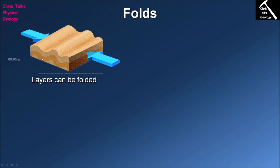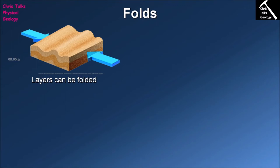Down in the ductile zone, this same sequence of rocks, because it is more plastic and able to flow, will not fail in a brittle fashion. Instead, our sequence of rocks will buckle and fold in response to compression, accommodating the compressive stress. This buckling is a way of accommodating the shortening of the rock caused by compression. Because our rock behaves in a ductile fashion, it accommodates that compressive force simply by allowing the layer to buckle, becoming shorter.